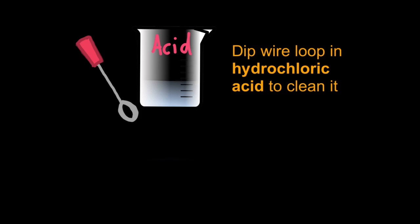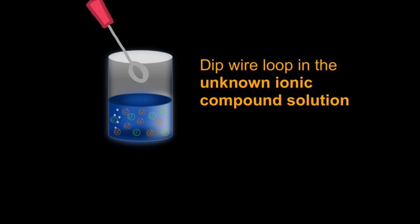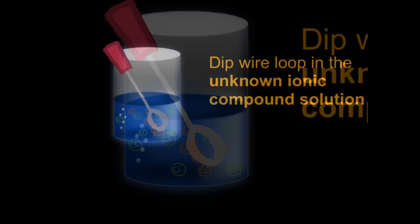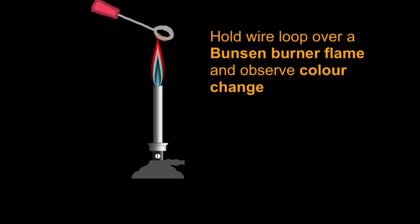First let's look at flame testing. What you start off with is a wire loop which you then dip into some acid to clean it and then remove it. In school labs we usually use weak hydrochloric acid. Next you dip the wire loop into the unknown ionic compound solution. And obviously some of that liquid containing ions will stick to the wire loop. When you remove the wire loop those ions will still be on it. So you can see copper ions there. Next you hold the wire loop over a Bunsen burner flame and observe the color change.